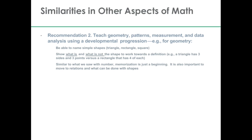Let me give you one more example using those other aspects of math, showing the application to this other area. The example in the guide is talking about shapes — what do children learn about shapes and geometry, and the developmental progression there. The first steps are that children become able to label or identify simple shapes like triangle, rectangle, or square. What we're recommending as a technique for supporting this knowledge is to use examples with children, but to use examples of things that both are the shape and things that are not the shape.